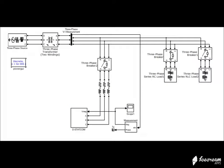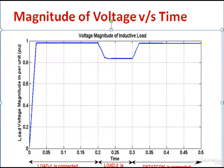The figure shows the basic circuit for implementation of the phase control method. The D-STATCOM has been connected to the line through a circuit breaker. This is the output of the phase control method: load 1 is connected and after 0.2 seconds an inductive load is connected, which results in a voltage sag. When D-STATCOM is connected after 0.3 seconds, the voltage is again maintained at 1 per unit.